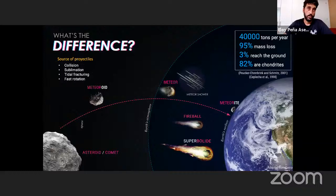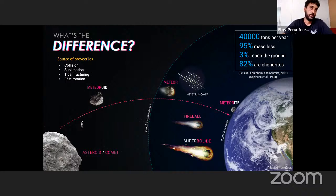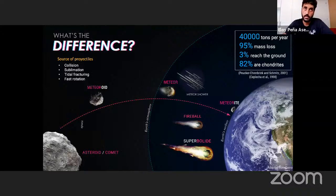These two types of bodies can suffer different disruption processes: collision with other objects, sublimation when they approach the sun causing outgassing of ice, and tidal fracturing when they fly by a large planet. Also, many asteroids are rubble piles and can fragment if they have fast rotation.